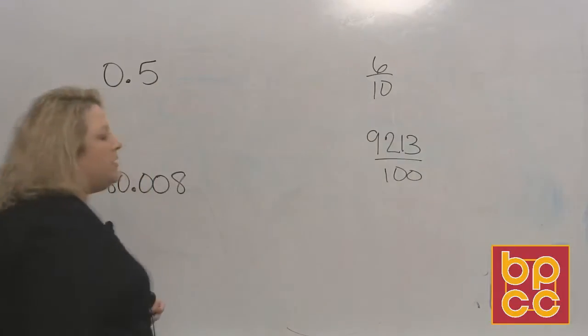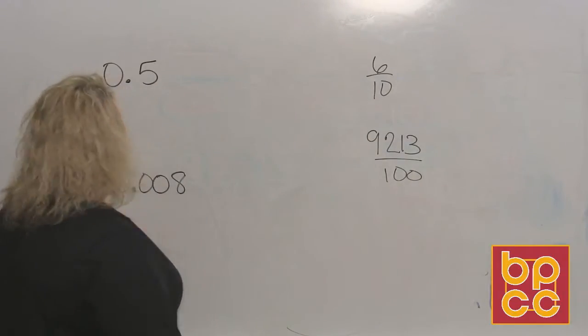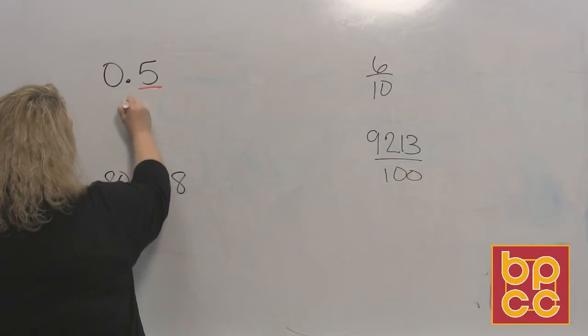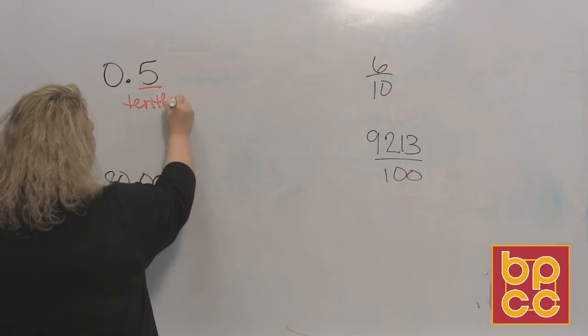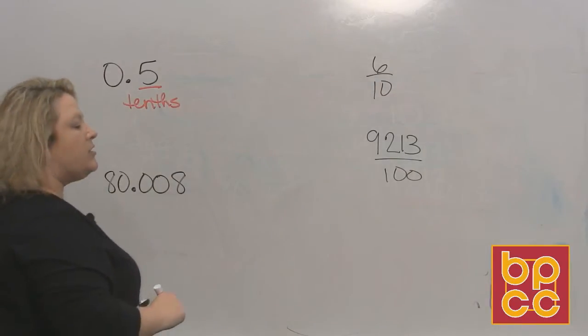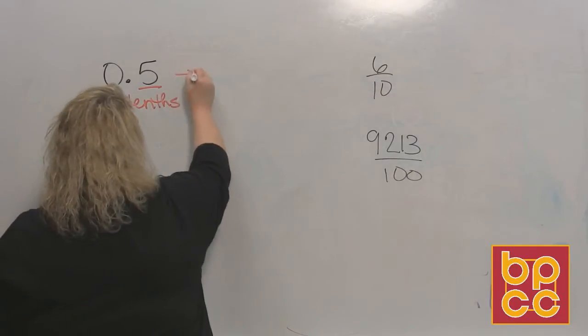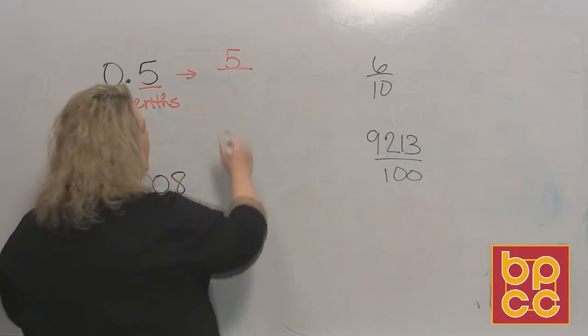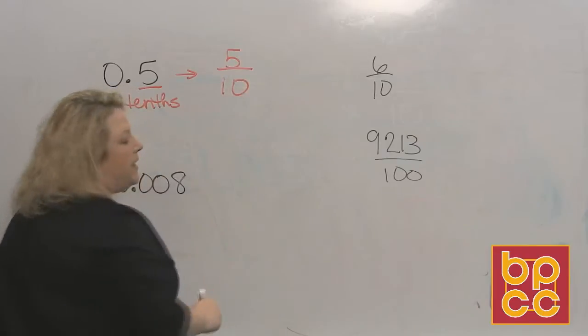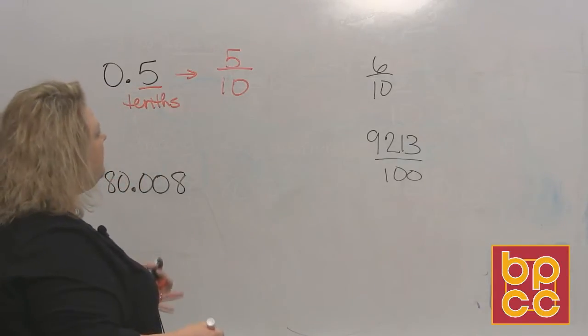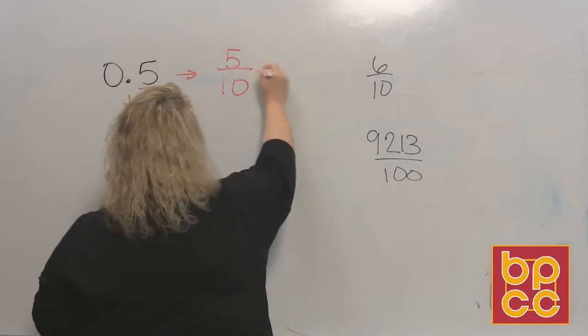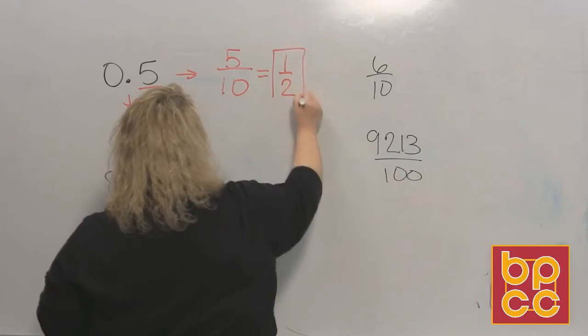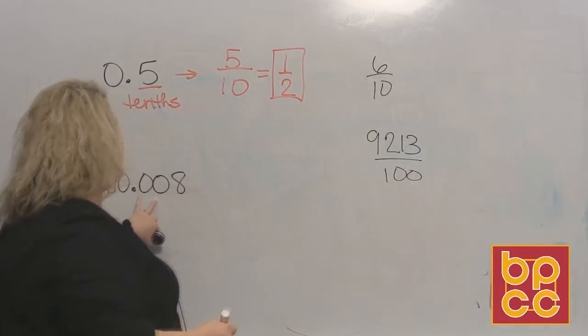I have the decimal 0.5, which you would read as 5 tenths. The 5 is in the tenths place. So when I go to write my fraction, I would write the digit 5, and since it's in the tenths place, my denominator is 10. And from there, if you can reduce it, you would definitely want to do that. 5 tenths will reduce to 1 half.